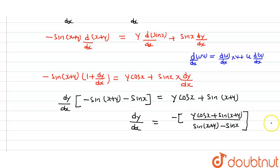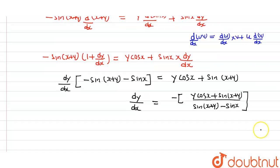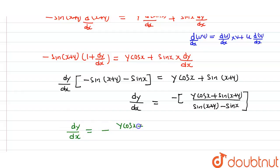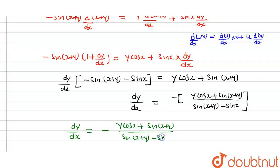Hence the required differentiation of the given function is dy/dx = [−y·cos(x) + sin(x + y)] / [sin(x + y) − sin(x)]. This is your required answer.